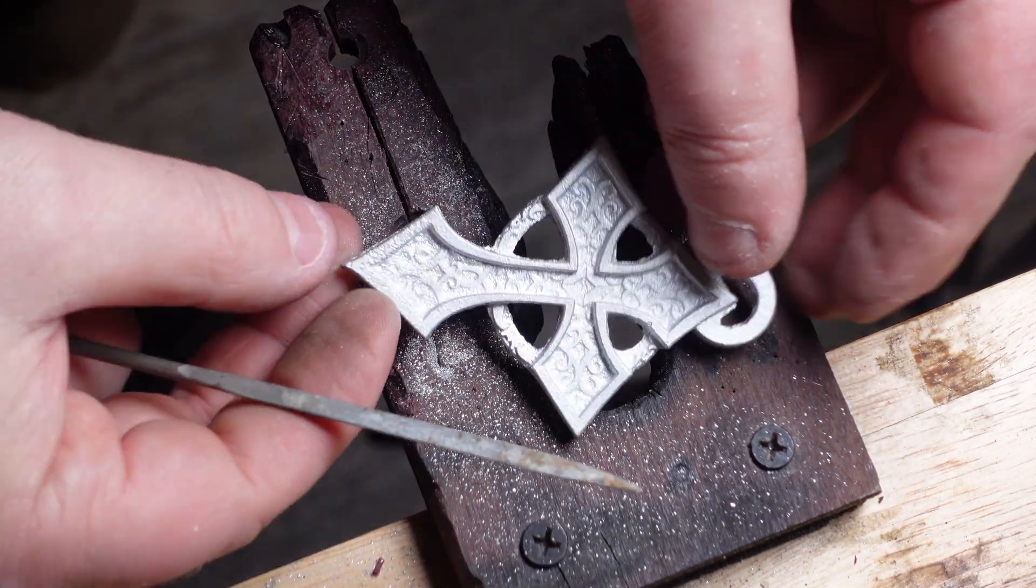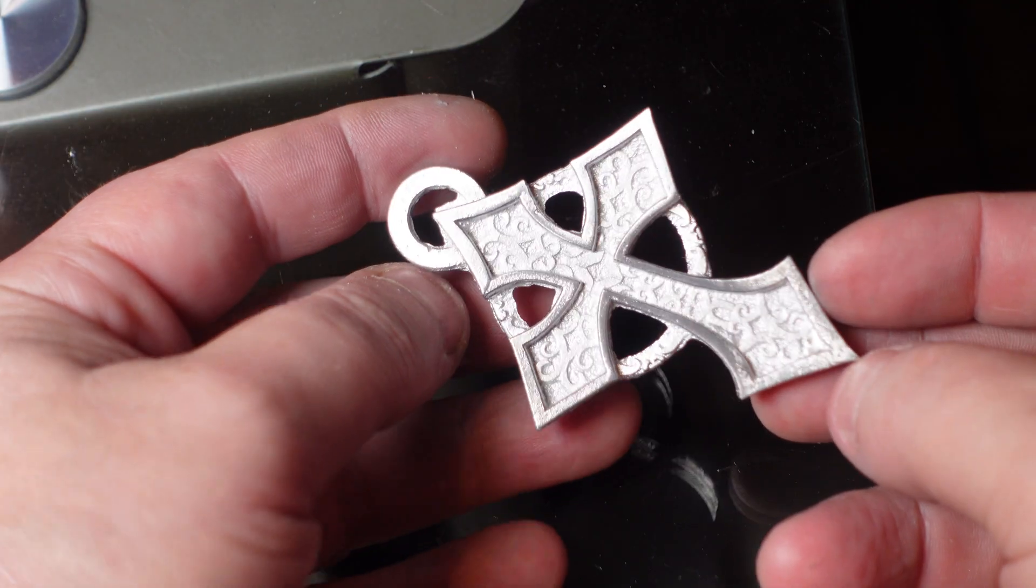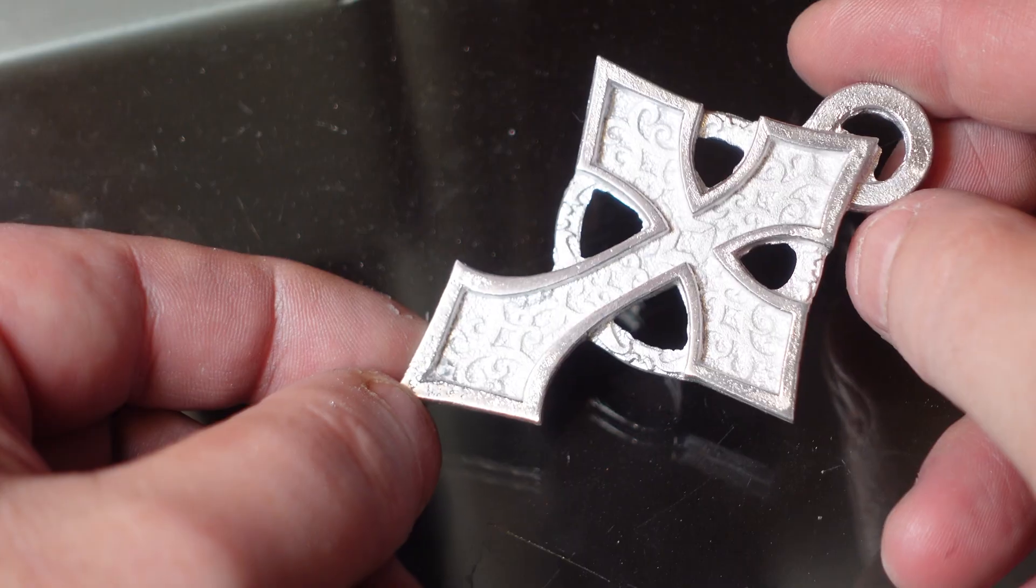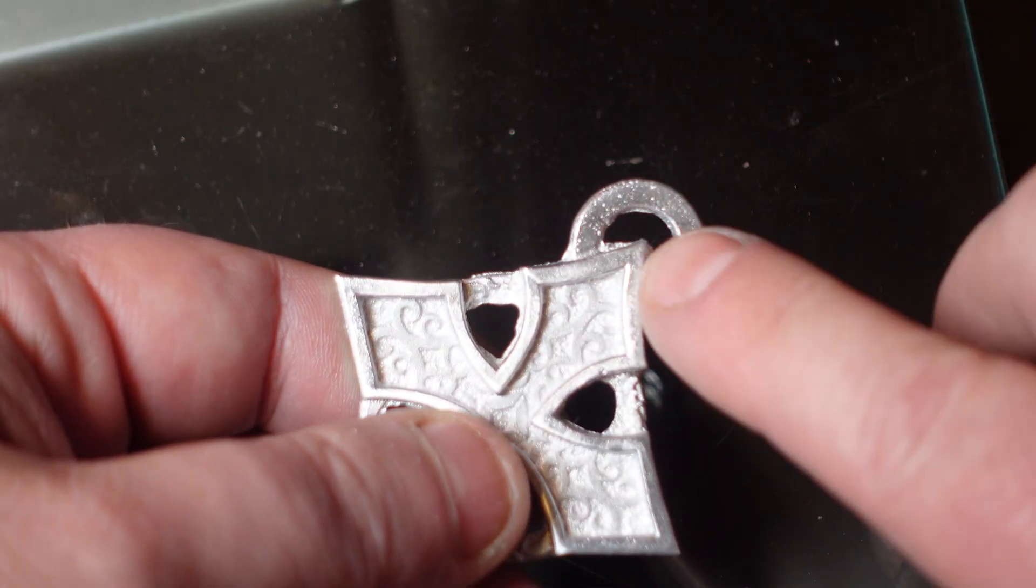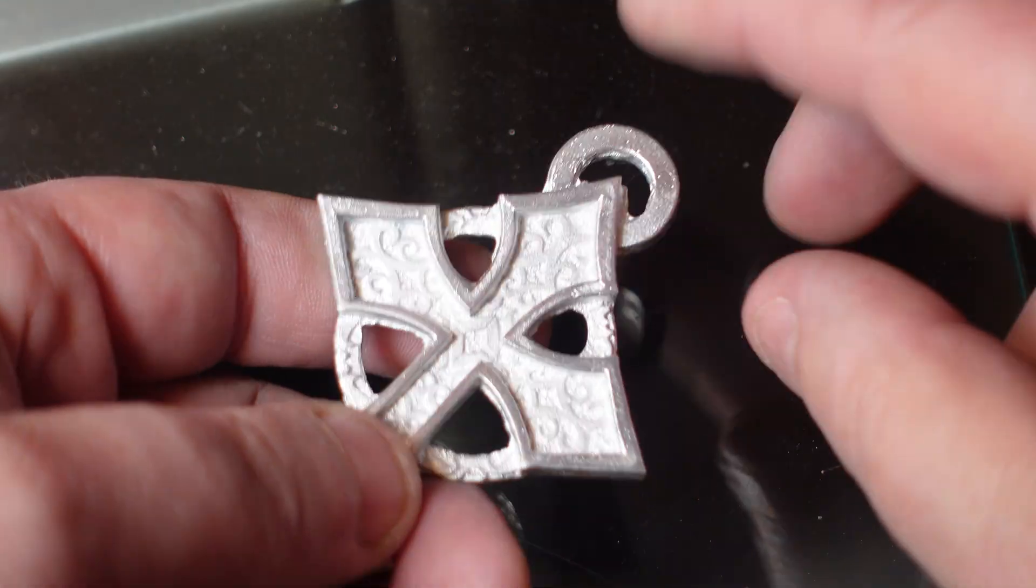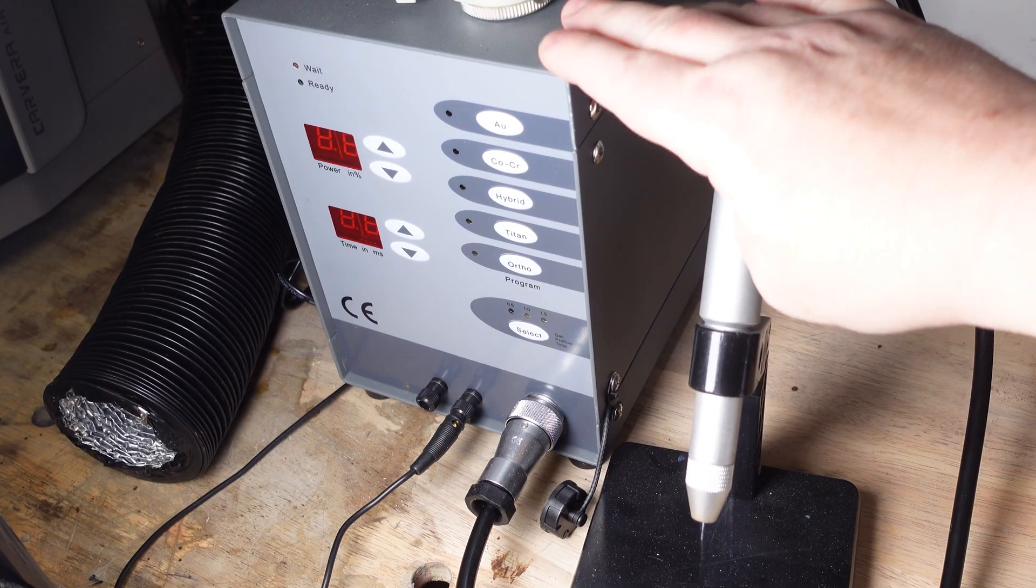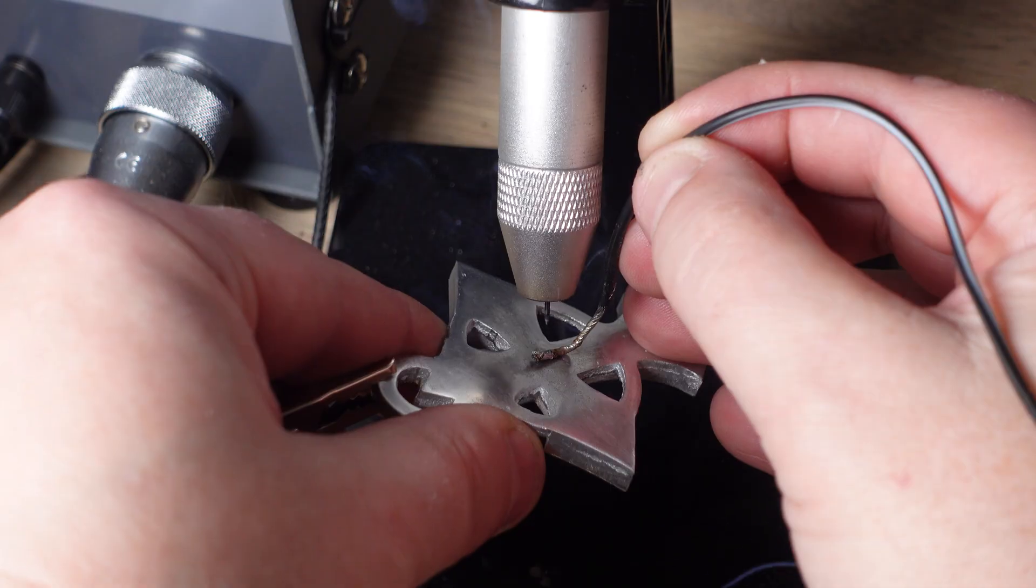Next we need to connect wires to our anode and our cathode. We could just wrap them but I want the part to hang horizontally so I think I'm just going to attach it on the back with a quick tack weld using my pulse arc welder. I did a review on this machine in my last video. I love this thing, I get so much use out of it.